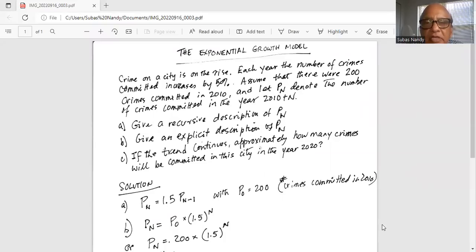Crime on a city is on the rise. Each year the number of crimes committed increases by 50%. Assume that there were 200 crimes committed in 2010 and let Pn denote the number of crimes committed in the year 2010 plus n.